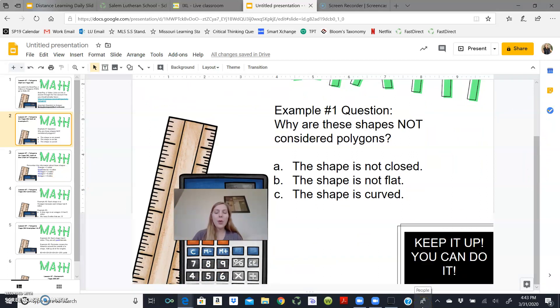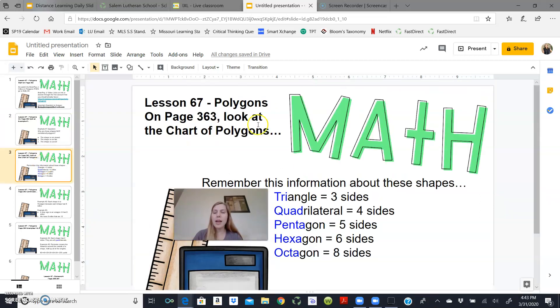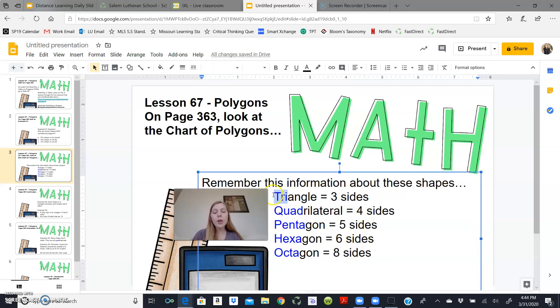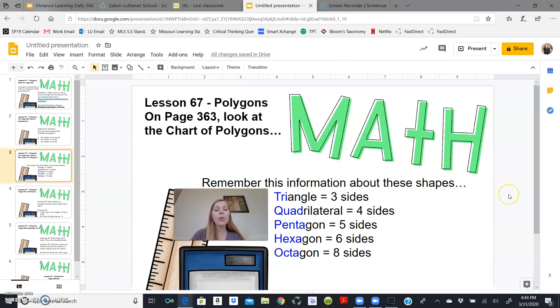Here's your little message on this corner. It says, keep it up, you can do it. All right, so we are on page 363. And I want you to look at that chart that is given to you. And the information that I want you to remember from this chart is each of these shapes along with the sides that correlate with it. And also pay close attention to the blue letters that are highlighted for you. Those are important to remember also.